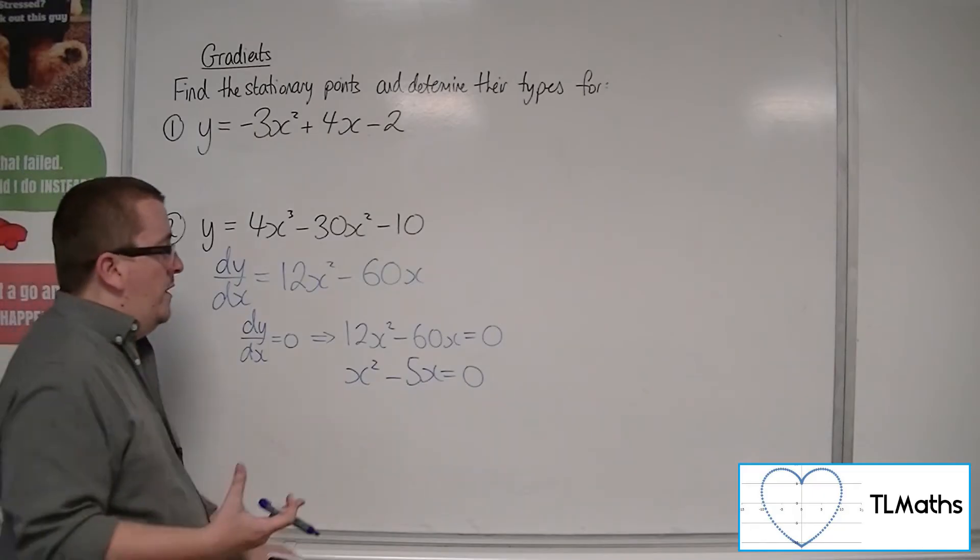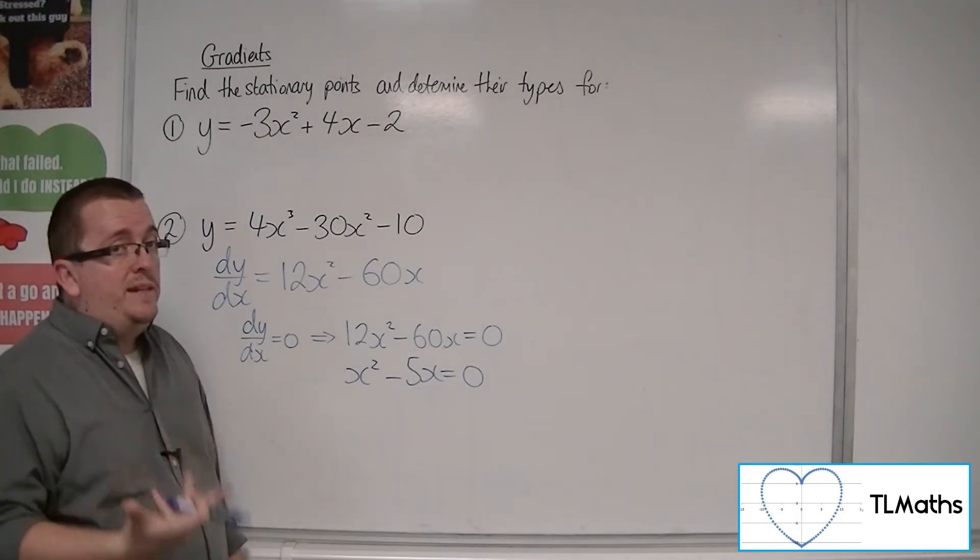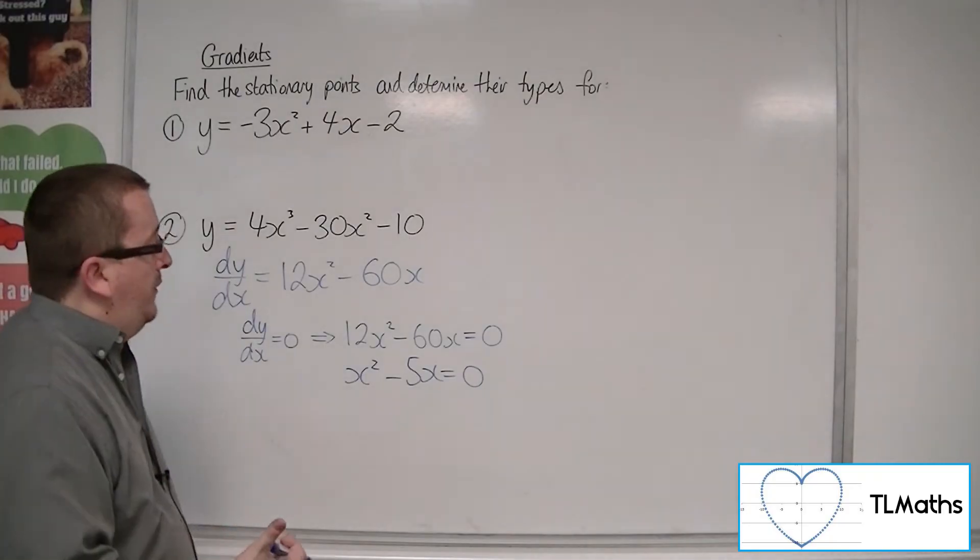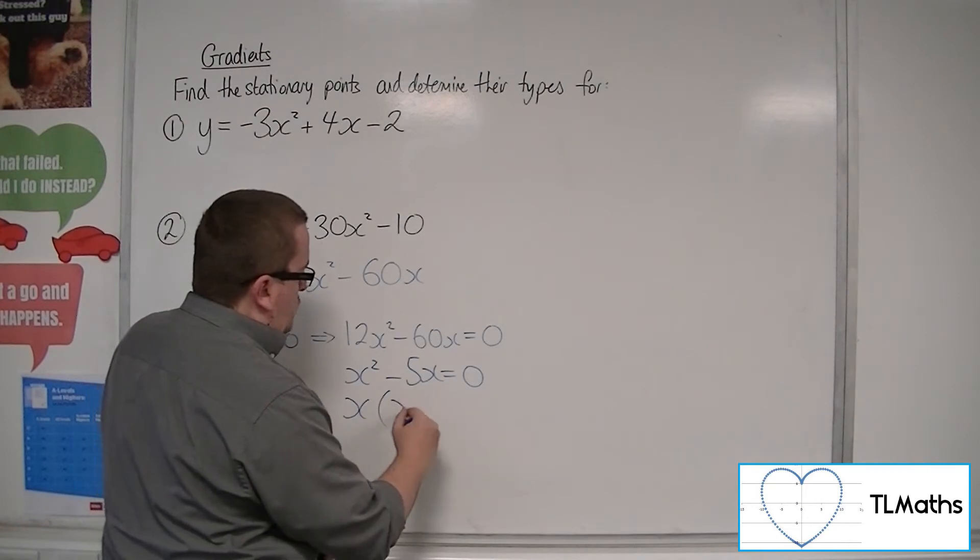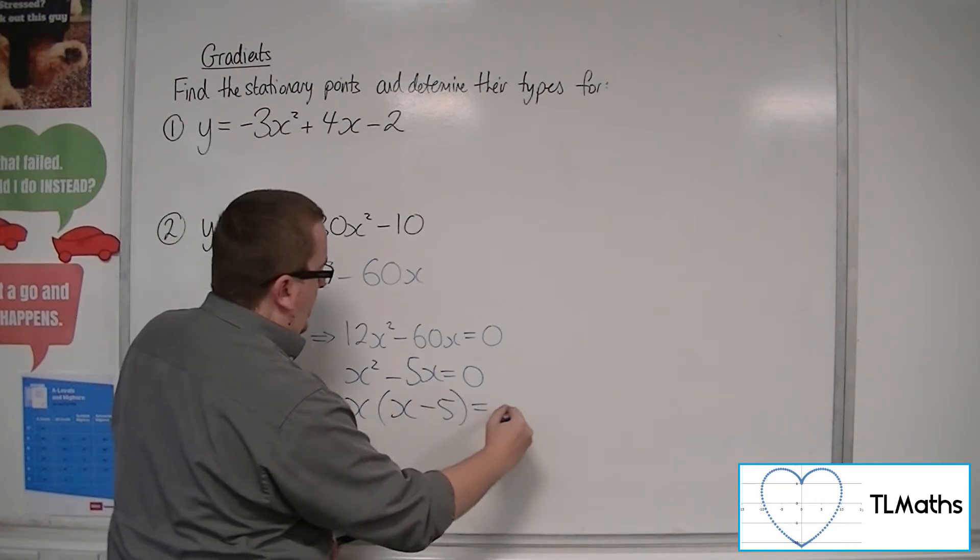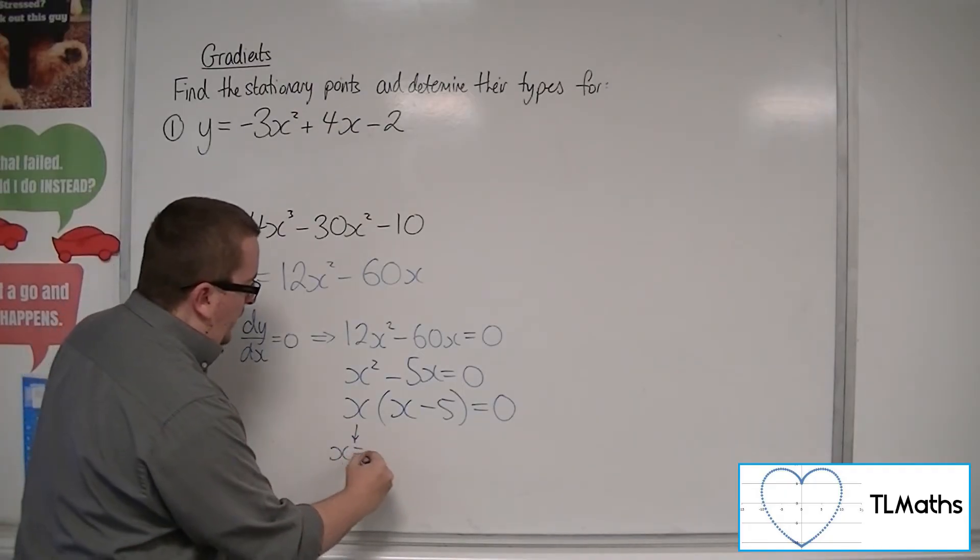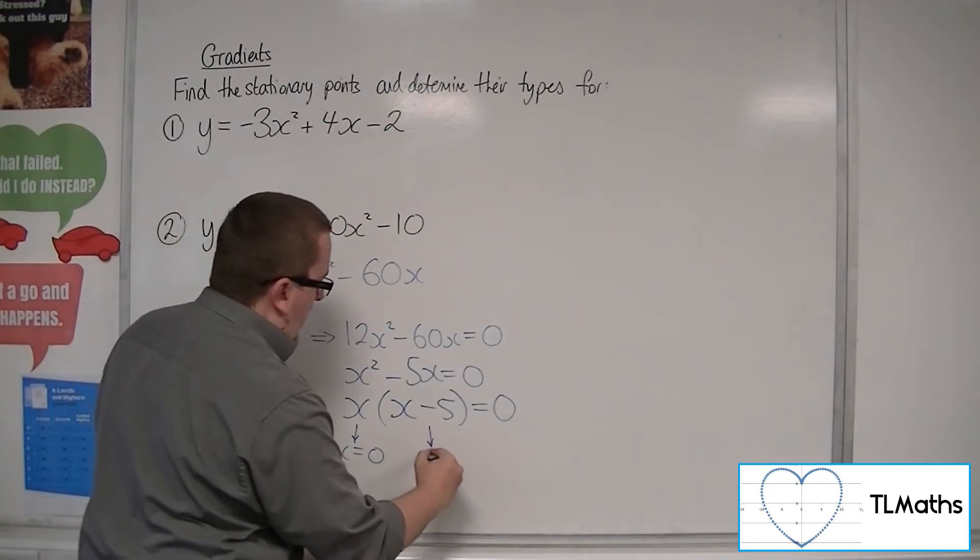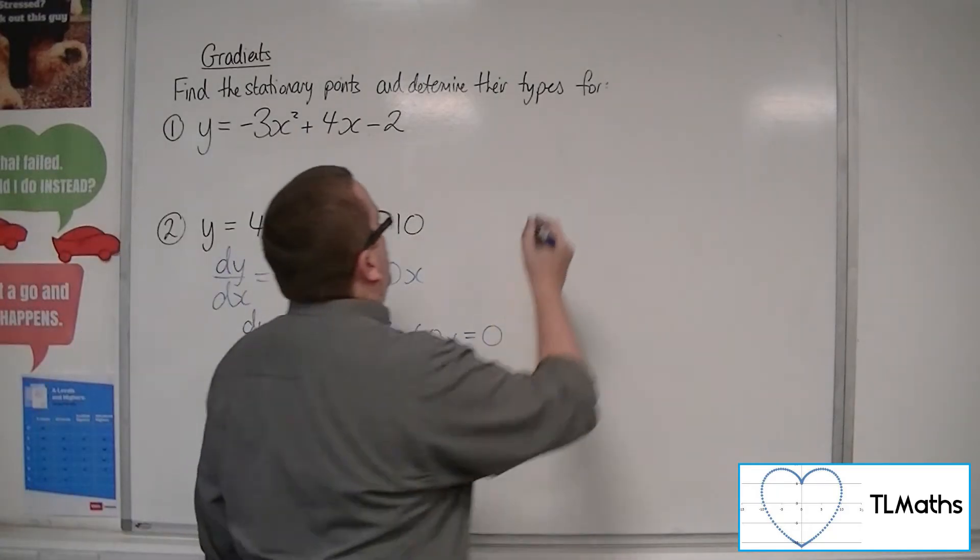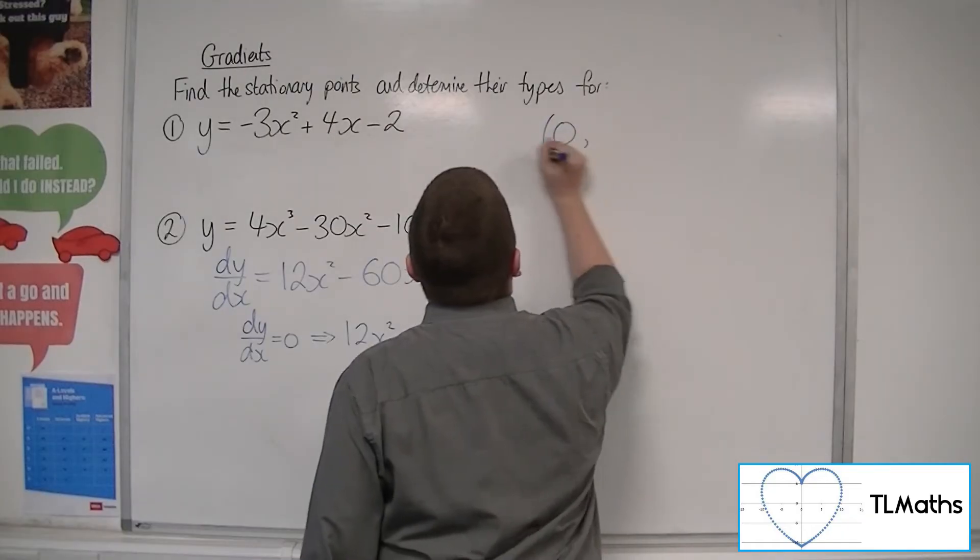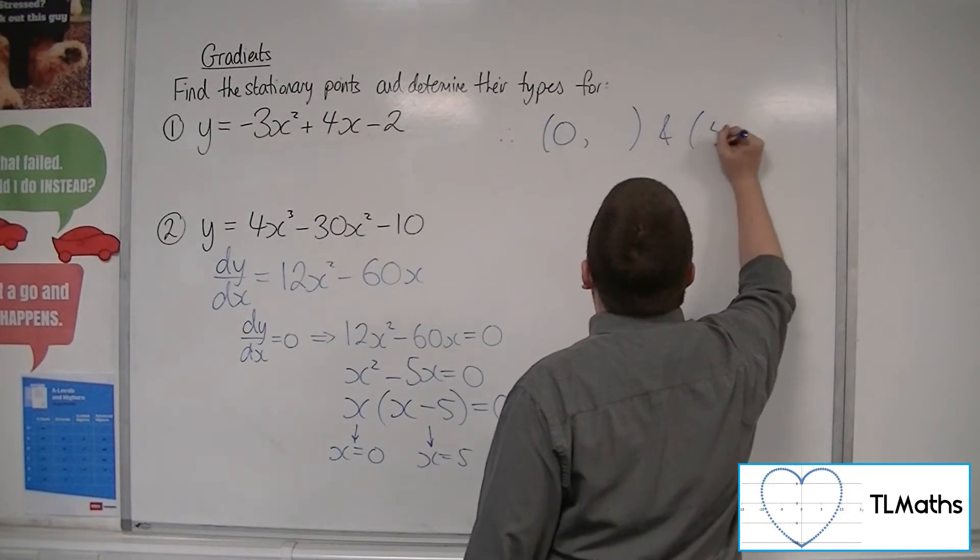Now, this we can factorise. You do not want to divide through by x. Because remember, x can be 0. Dividing through by 0 causes problems and you're going to lose a solution. So we factorise it as x times x minus 5. So either x is 0 or x is 5. So there are two stationary points. We have one with x coordinate 0 and one with x coordinate 5.